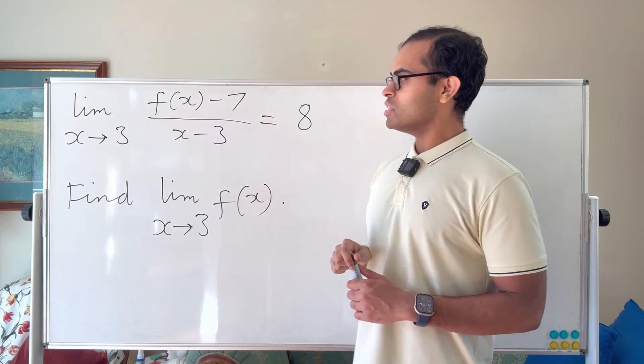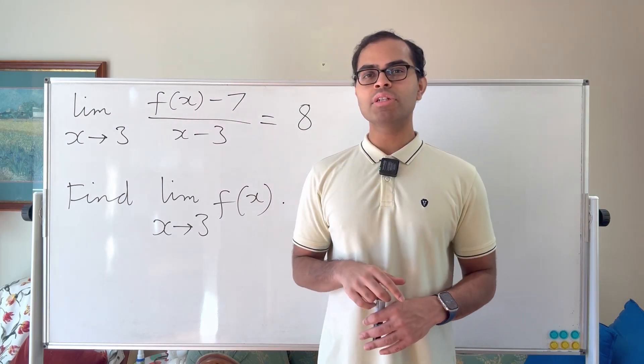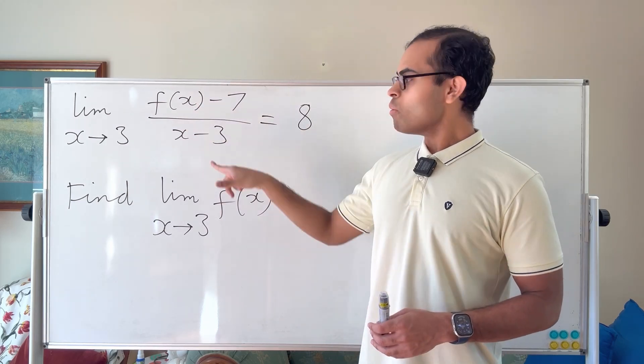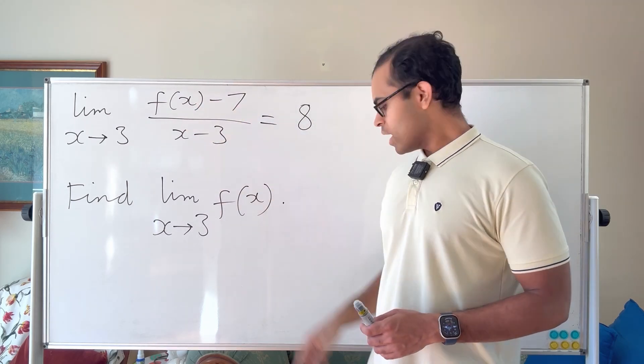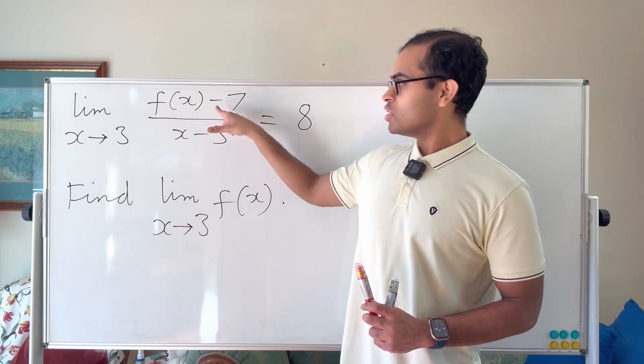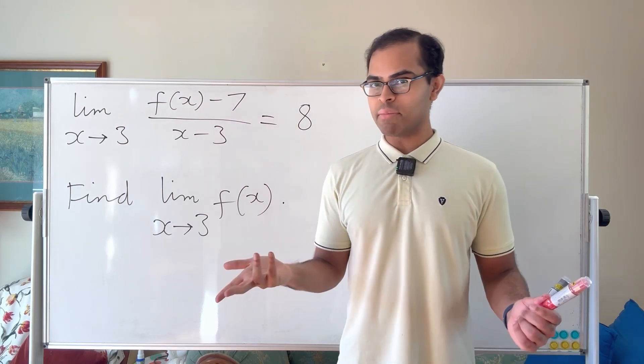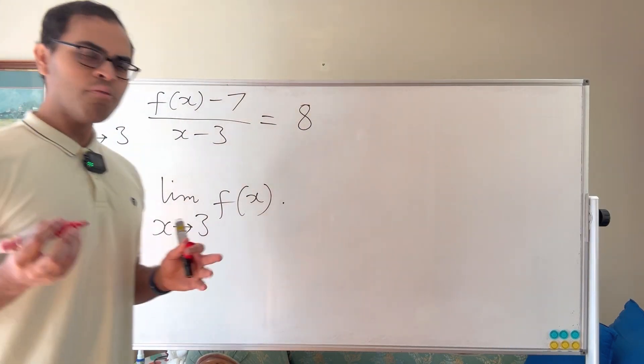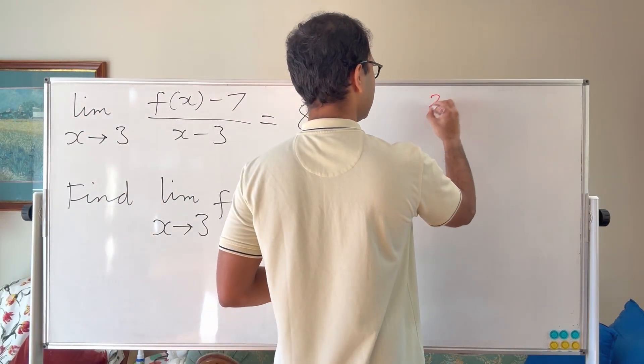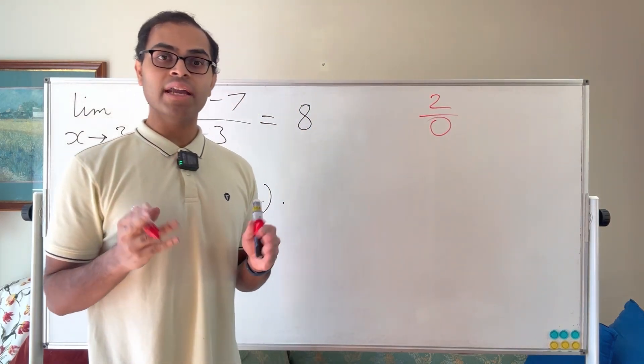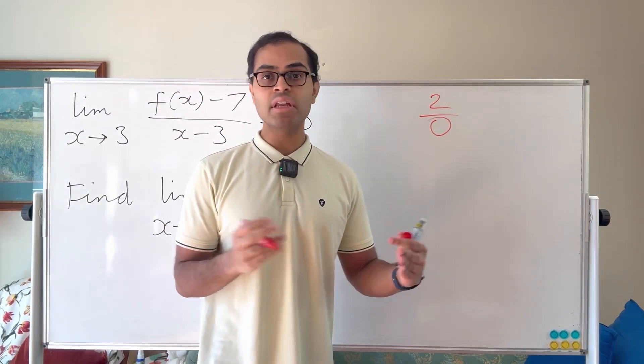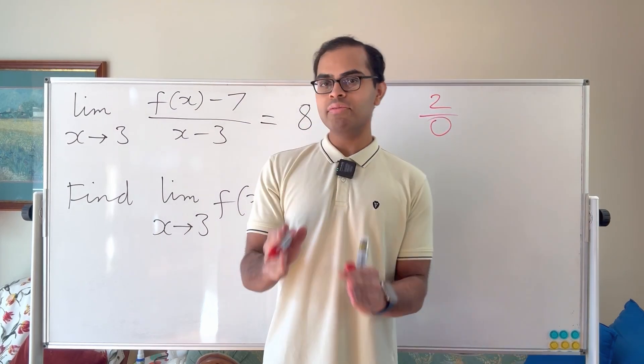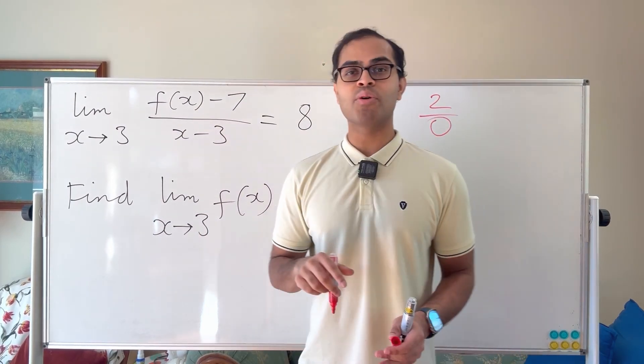Let's think about what f of x could approach as x approaches 3. So first of all, as x approaches 3, if f of x approached 9 for example, let's just think about that. If f of x approached 9, what would happen to the limit? Well, if f of x approached 9 as x approached 3, the numerator would approach 2, 9 minus 7, and the denominator would approach 0. But that would be a limit that looks something like 2 over 0, which is undefined.